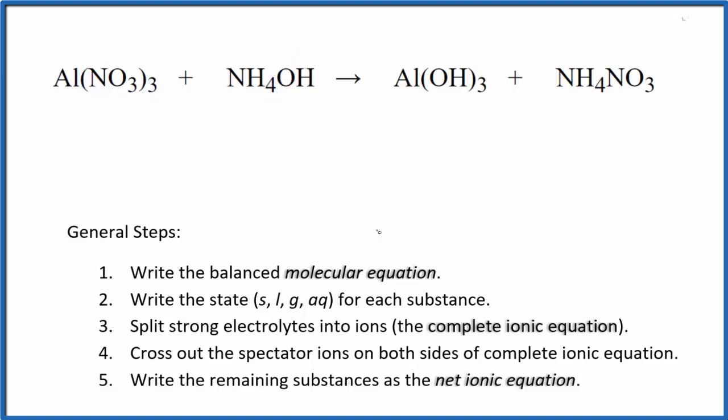So the first thing we do with net ionic equations, we balance the molecular equation. This is the molecular equation. I can see that I have three of these nitrate ions here and just one here. So I'll put a three in front of the ammonium nitrate. The nitrates are balanced, but now I have three ammonium ions and only one here. So I'll put a three in front of the ammonium hydroxide.